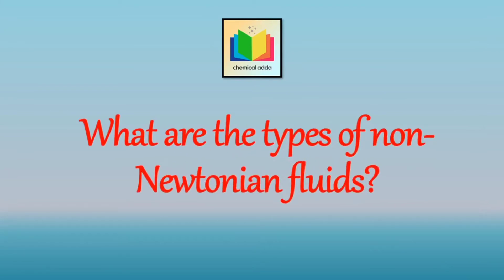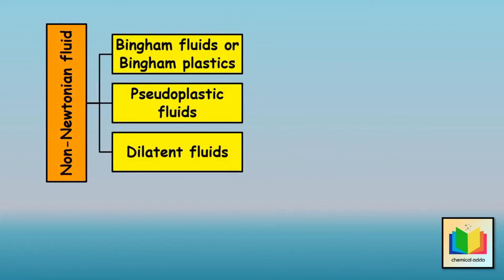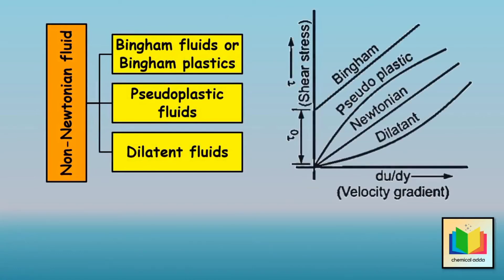What are the types of non-Newtonian fluids? There are three common types: Bingham fluids or Bingham plastics, pseudoplastic fluids, and dilatant fluids. Bingham fluids do not flow unless a threshold shear stress value, tau₀, is exceeded, because these fluids resist a small shear stress tau₀ indefinitely but flow linearly under the action of larger shear stress. Examples are toothpaste, jellies, paints, sewage sludge, and some slurries.